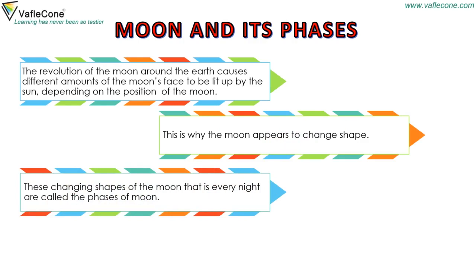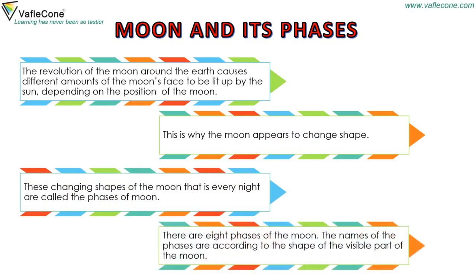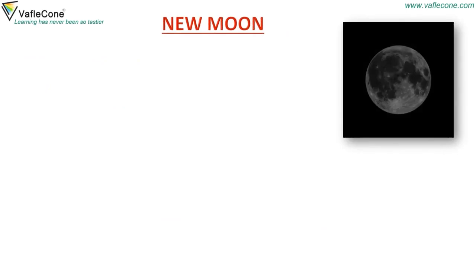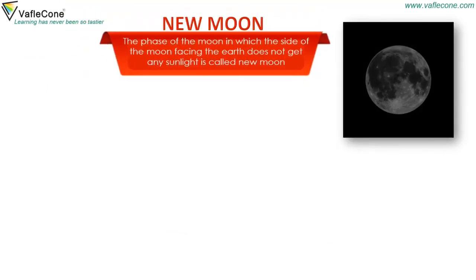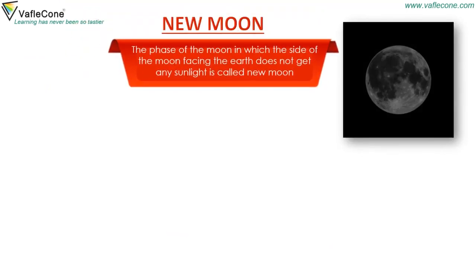There are eight phases of the moon. The names of the phases are according to the shape of the visible part of the moon. New Moon: The phase of the moon in which the side of the moon facing the earth does not get any sunlight is called new moon.